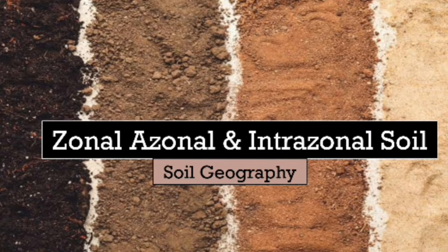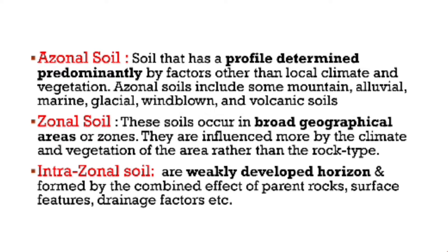Hello everyone, in this video we are going to discuss zonal, azonal, and intrazonal soil. Zonal soil is a soil where the profile is identified and determined. It covers broad geographical areas, i.e. the tundra or taiga region — we will call it zonal, because it is named after the zone. It is a kind of soil which covers a broader area or region.